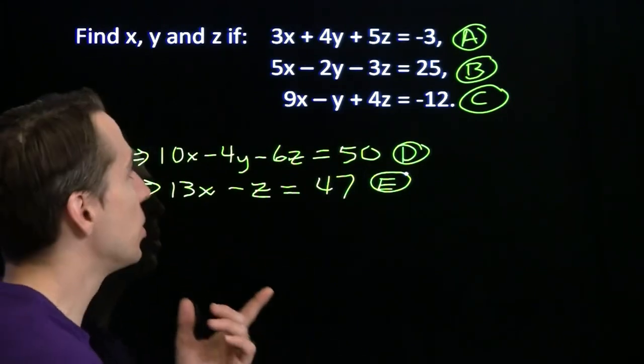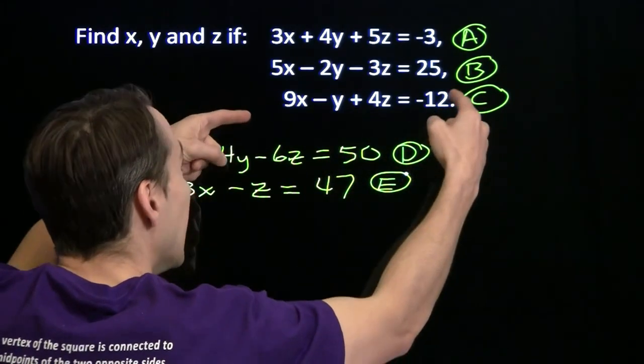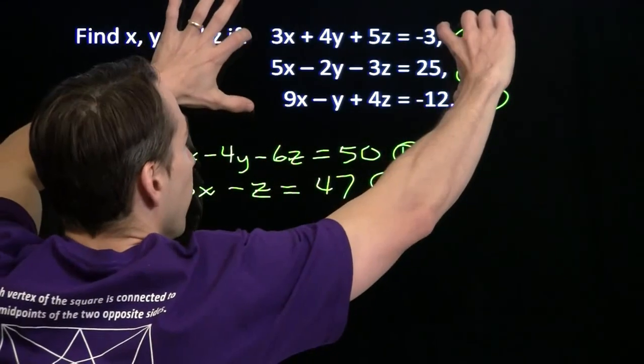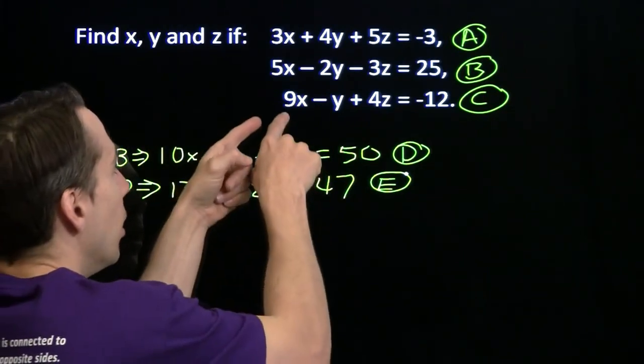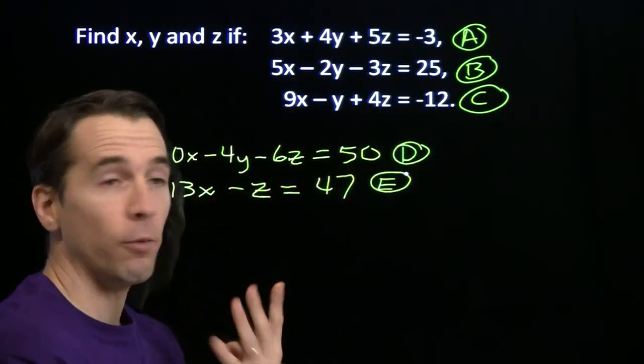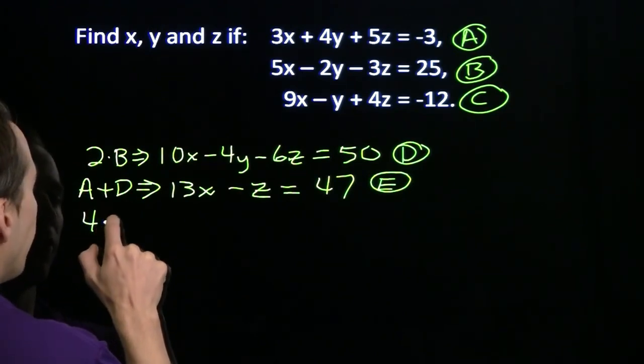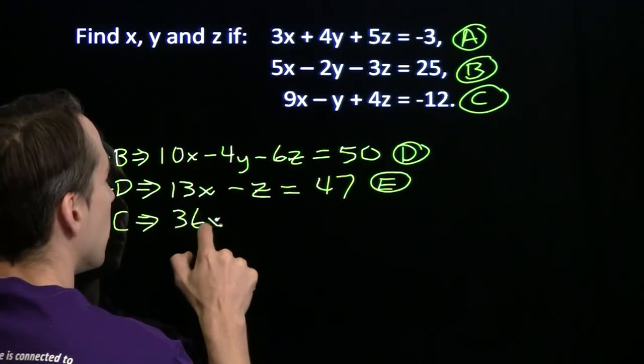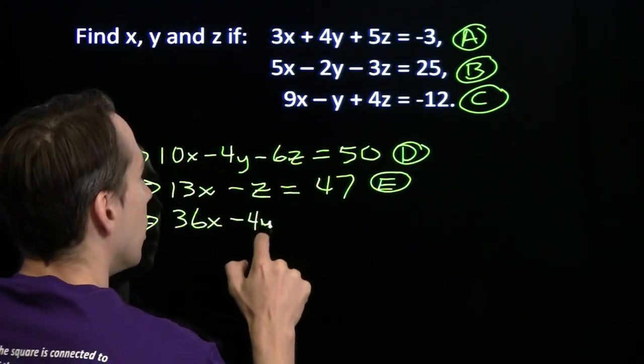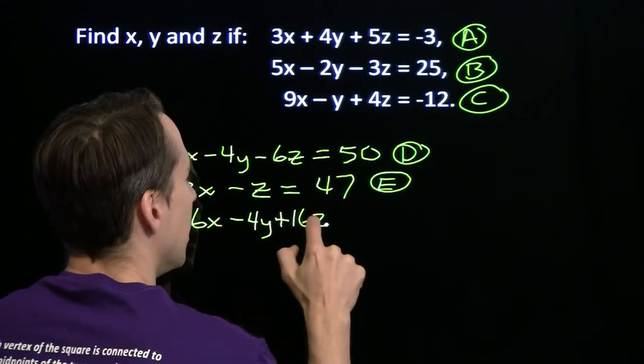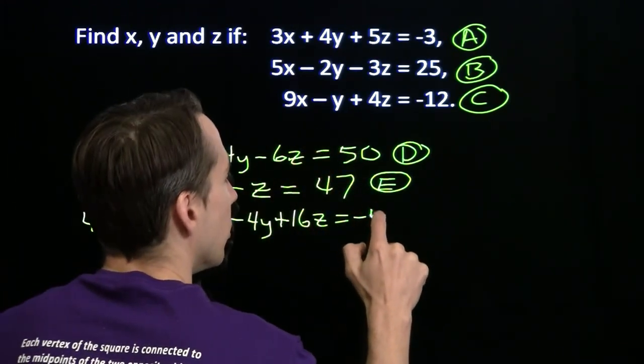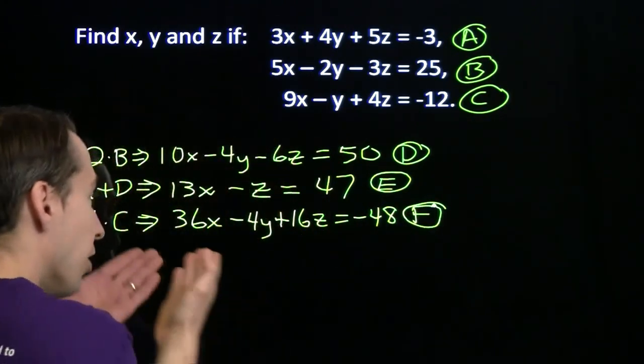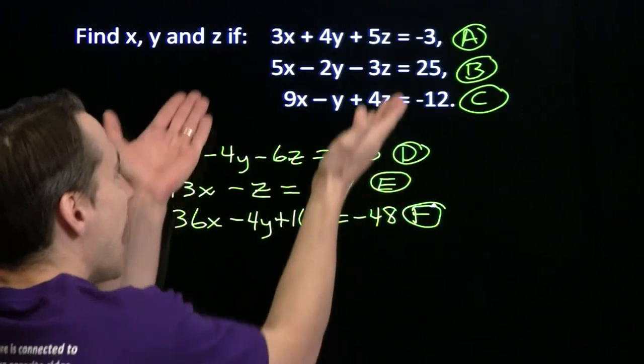I can get another equation with just x and z. I can take C, this equation, and set up an elimination with A. Eliminate y again. If I eliminate y from these two equations, we'll be all set. We're going to multiply this equation by 4 to set up that elimination. So we start off with 4 times equation C, and we'll get 36x minus 4y plus 16z equals negative 48. That gives us equation F.